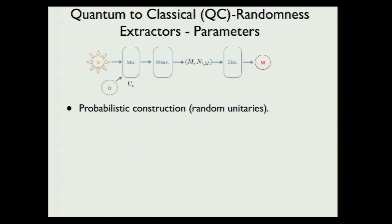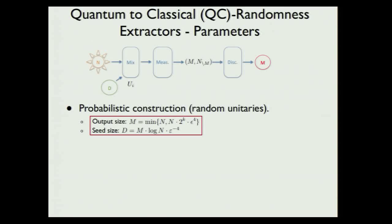In the extractor business one usually starts with probabilistic constructions — here this corresponds to random unitaries. With random unitaries we can show an output size of the minimum between n and n times 2^k times epsilon^4, where k can be negative (if there's entanglement between the N and E systems). The seed size of this probabilistic construction is M times log N times epsilon^{-4}, which is quite bad since the seed has to be basically proportional to the size of the output system — but these are strong extractors so the seed can be reused.